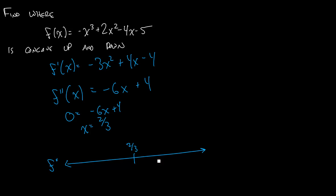So let's plug in a point over here. Now 1 is a point that's to the right of 2 thirds, so I'll try negative 6 times 1 plus 4, you get negative 2. So that tells us everything over here is negative for f double prime.